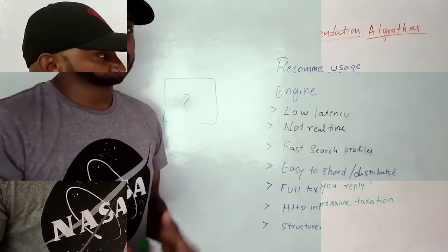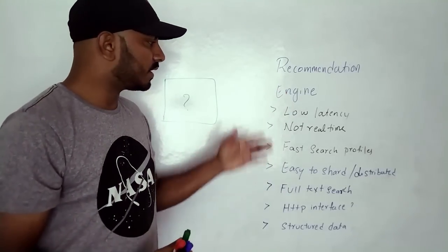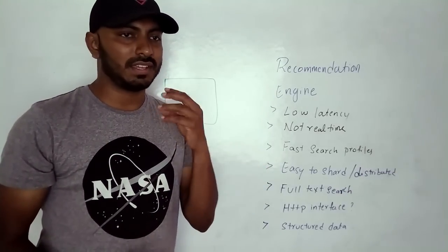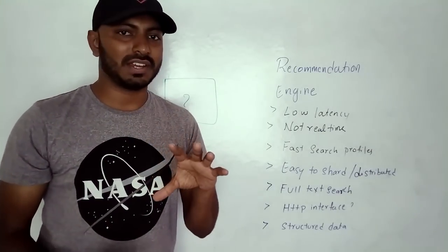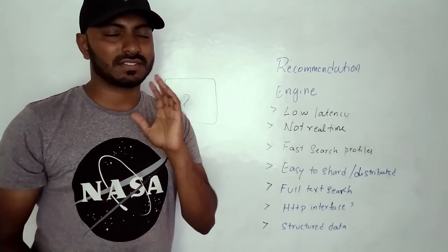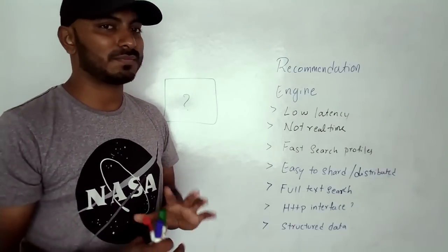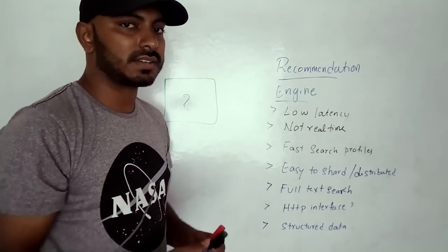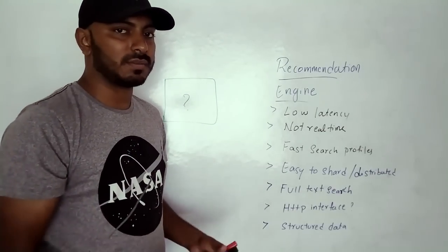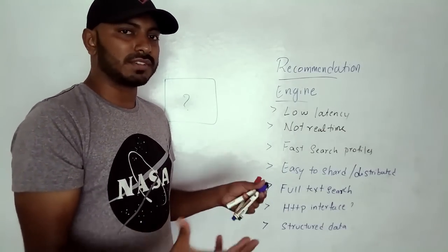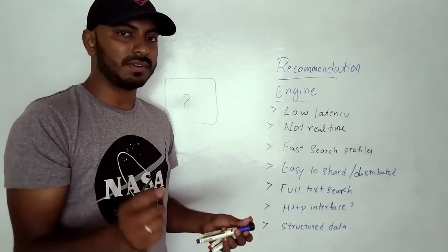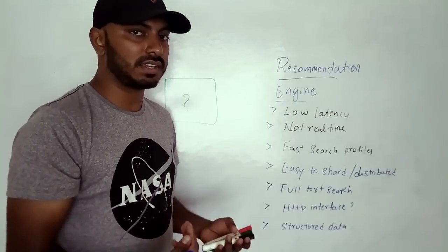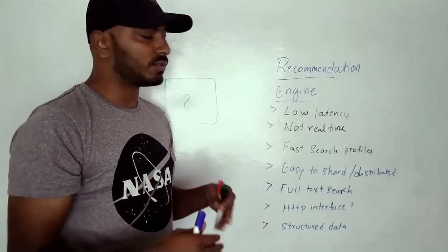This algorithm considers all that information when querying profiles for recommendations. Let's focus on recommendation engine design. The characteristics it should have: low latency (results must load immediately when you open the app), it's okay to be non-real-time (a new user not being visible instantly is fine), it needs faster profile search, it needs to be distributed to handle tons of profiles, and it needs full-text search support to search based on multiple parameters.